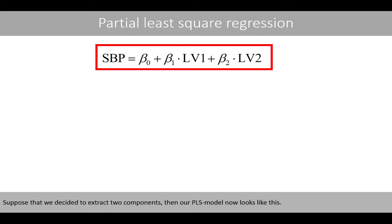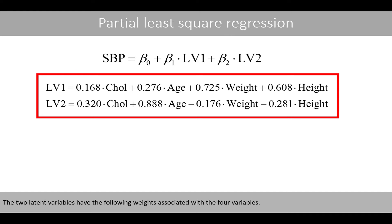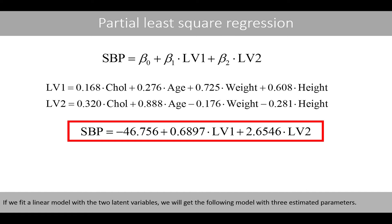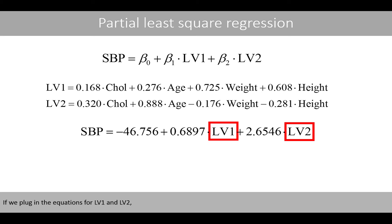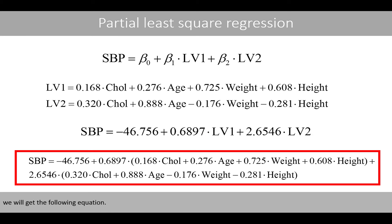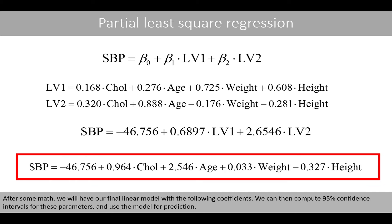Suppose that we decide to extract two components. Then our partial least-square regression model now looks like this. The two latent variables have the following weights associated with the four variables. If we fit a linear model with the two latent variables, we will get the following model with three estimated parameters. Plugging in the equations for LV1 and LV2 and doing the math, we arrive at the final linear model with the following coefficients. We can then compute 95% confidence intervals for these parameters and use the model for prediction.